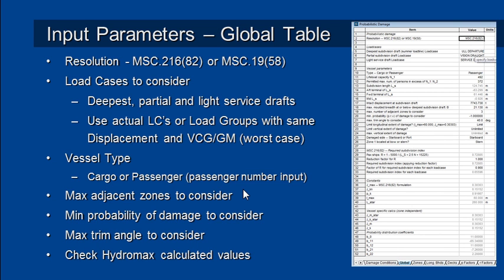You should try out seeing if you can get away with just considering one or maybe two adjacent zones. If you can reach a retained index that way, that will make the analysis faster, but if you need to, you can increase the number of adjacent zones of damage to consider up to three, four, or higher if required.